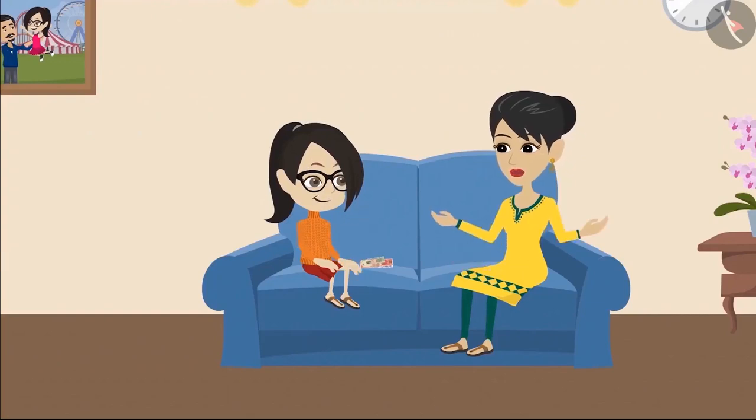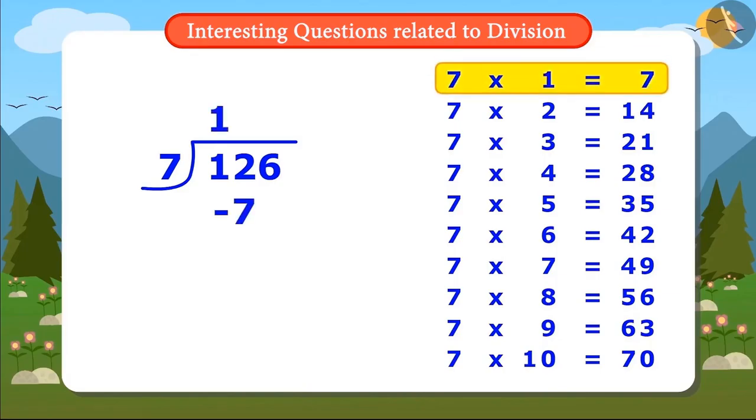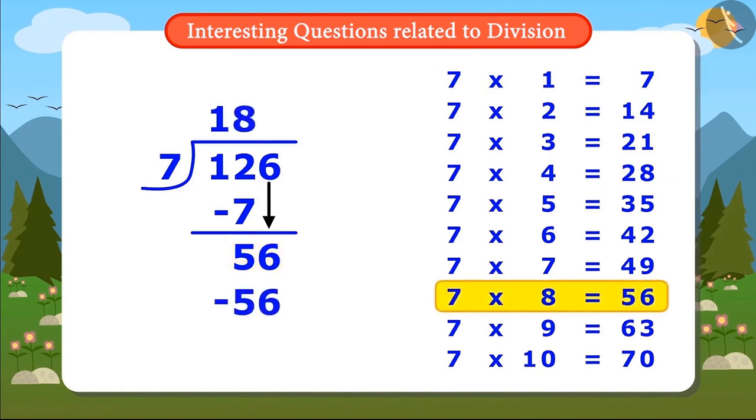Even if a number is greater than 70, you can still divide it. Look, I will show how to divide. 7 ones are 7, left 5, right? Let's write down 6, so it's 56. 7 eights are 56, remainder 0.